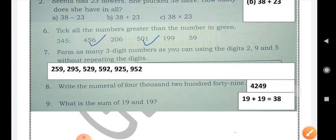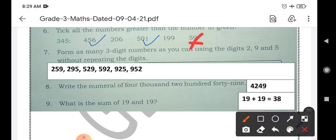Question 6. Tick all the numbers greater than the number in green. Greater means having big place value than the given number. The numbers are 456, 206, 501, 199, 59. See, at last we have a two digit number. We will cancel it. We know this is not going to be the greater than the number in green that is 345. Because three digit number is always greater than two digit number.